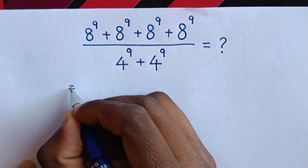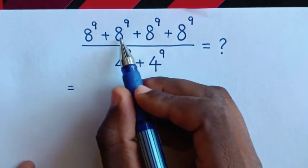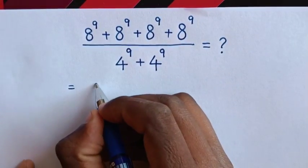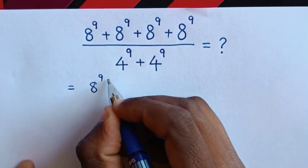So this is equal to, from here in the numerator, 8 power 9 is common. So we take 8 power 9 out of bracket.